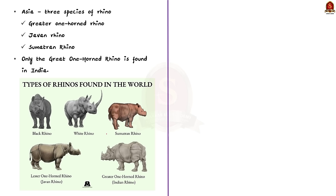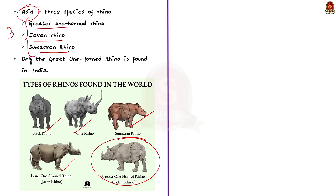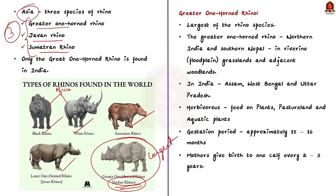The Greater One-Horned Rhino is among the five different species of rhino. The other four are the Sumatran rhino, Javan rhino, Black rhino, and White rhino. Only three species are found in Asia: the Greater One-Horned Rhino, Javan Rhino, and Sumatran Rhino. The Black Rhino and White Rhino are found in Africa. Only the Greater One-Horned Rhino is found in India, so it is also called the Indian Rhino, and it is the largest of the rhino species. It lives in northeastern India and southern Nepal, inhabiting grasslands and adjacent woodlands. In India, it is mainly found in Assam, West Bengal, and Uttar Pradesh. Greater One-Horned Rhinos are herbivores. Their gestation period is approximately 15 to 16 months, and they usually enjoy being alone except for females with younger ones.